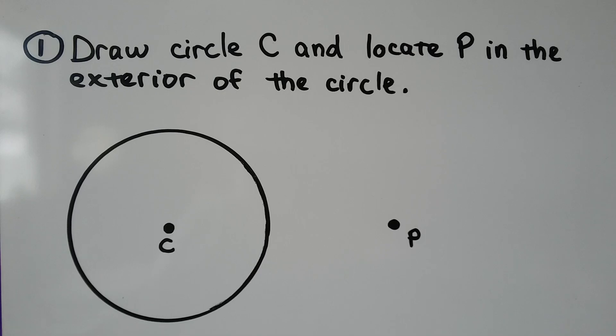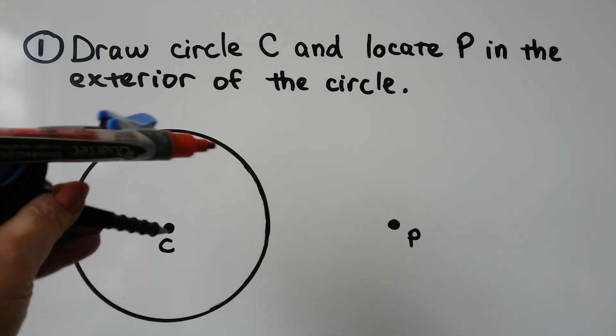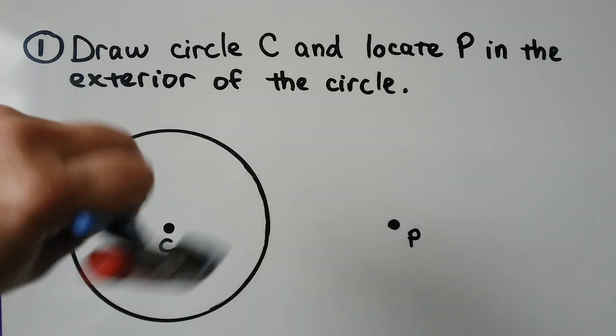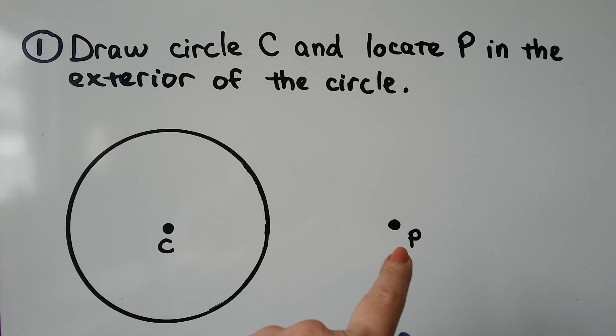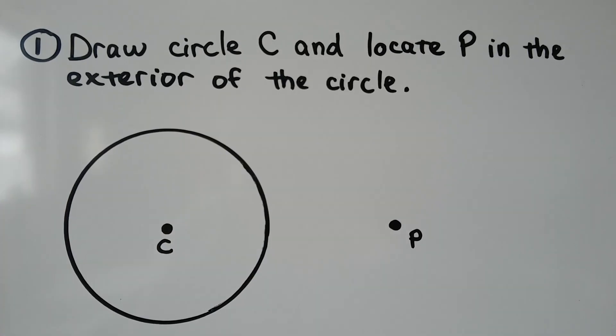The first thing we're going to do is take our compass and draw circle C, and then we're going to locate P in the exterior of the circle. So it could be anywhere out here. You don't want it too far away because we're going to make a midpoint and we want our compass to be able to reach.